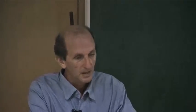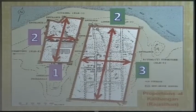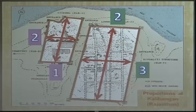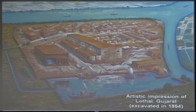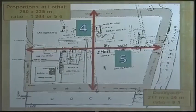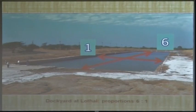Kalibangan in Rajasthan, on the bank of the Ghaggar-Saraswati river, has like Mohenjo-daro an upper city with proportions of 1 to 2 and a lower town with proportions of 2 to 3. At Lothal near Ahmedabad, when you look at the plan and take the midpoint, you find 5 to 4 again. The famous dockyard has proportions of exactly 6 to 1. It looks as if these people did not believe in constructing structures randomly — they imposed certain proportions.